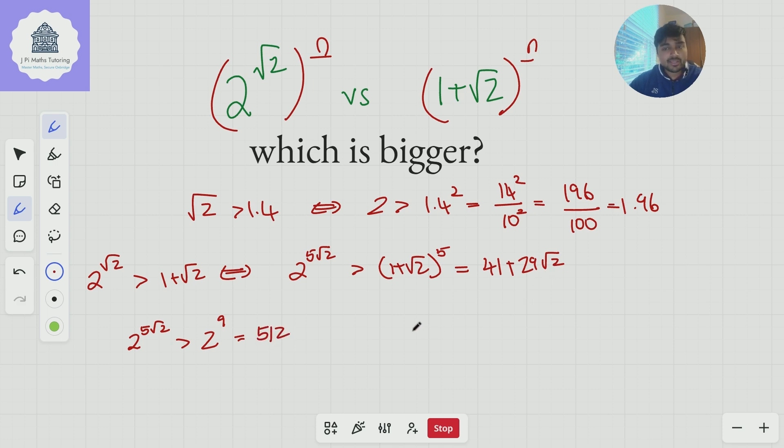Now this right-hand side here we can approximate in lots of different ways, but it's 41 plus 29 root 2. And maybe the simplest approximation for an upper bound is replacing root 2 with 3 over 2. So root 2 again is less than 3 over 2. This is not too difficult to check. Again, square both sides. This is true if and only if 2 is less than 1.5 squared, which is 2.25, which is true.